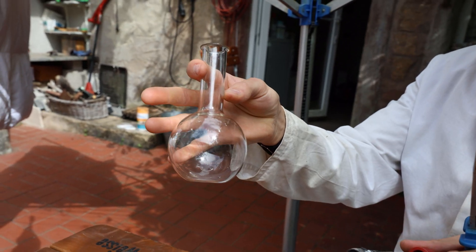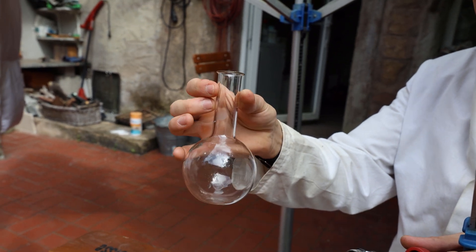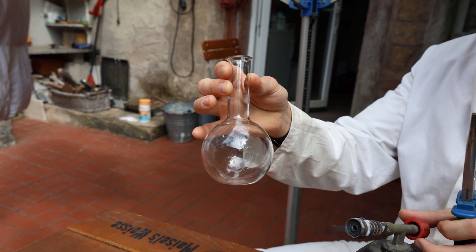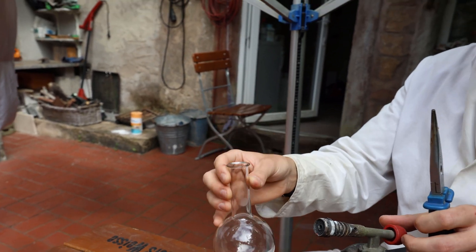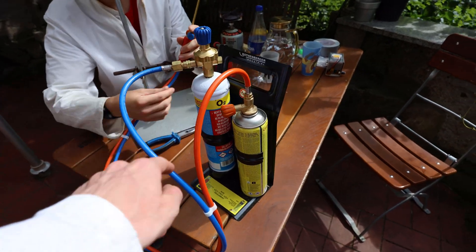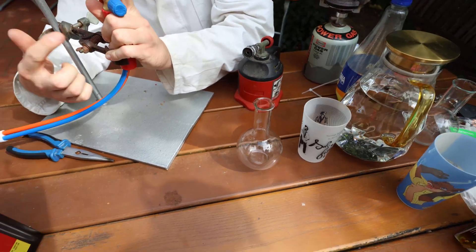This is the flask that we are going to store the bromine in once it's done and we will decrease the neck size a little bit. Heck yeah that's what we need, an oxygen burner, because this glass is way too thick for that.